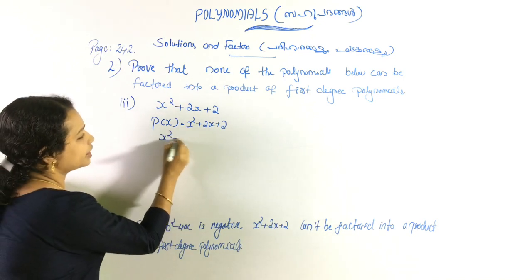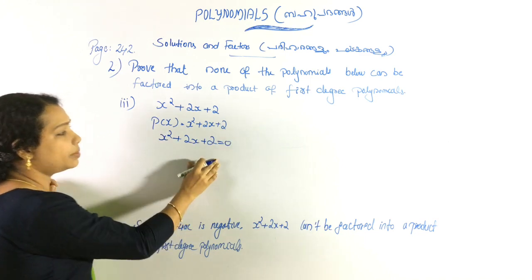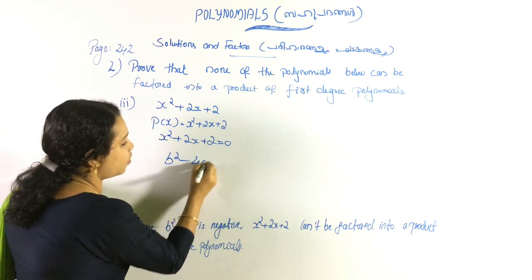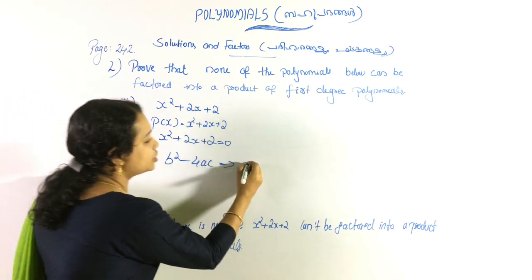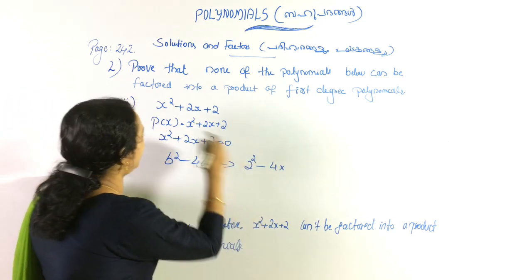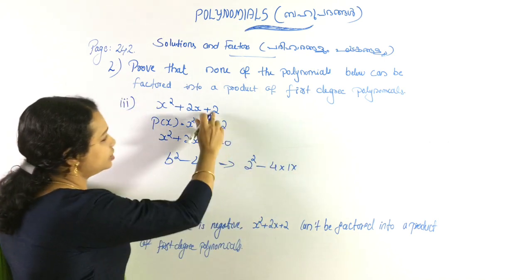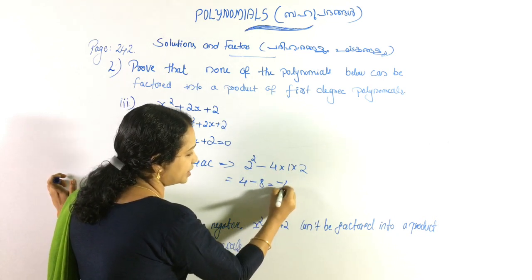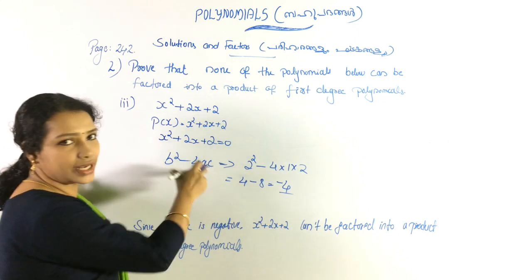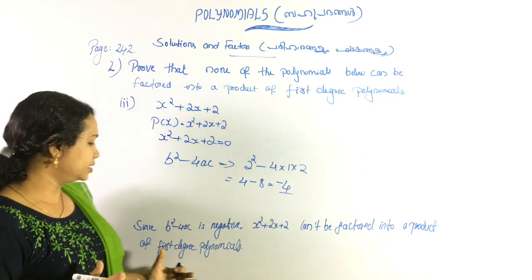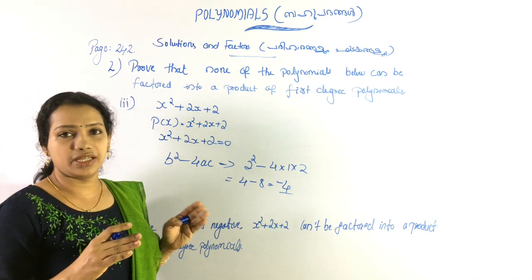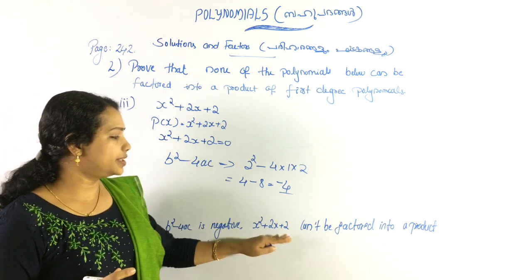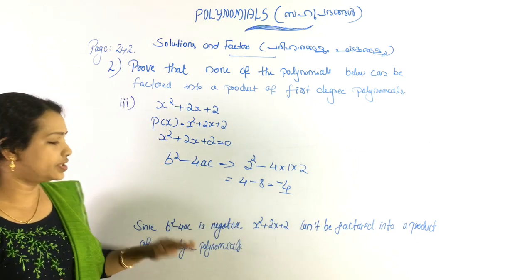We have the equation 2x + 2 = 0. Now we calculate the discriminant: b² - 4ac. Here b = 2, so b² = 4. We have 2² minus 4 times a=1 times c=2, giving 4 - 8 = negative 4. Since b² - 4ac is negative, x² + 2x + 2 cannot be factored into a product of first-degree polynomials.